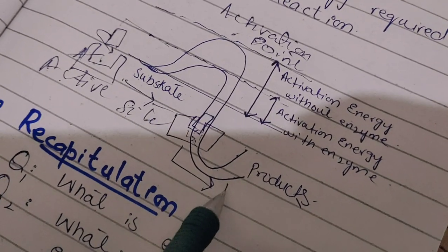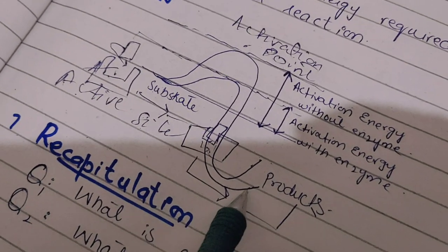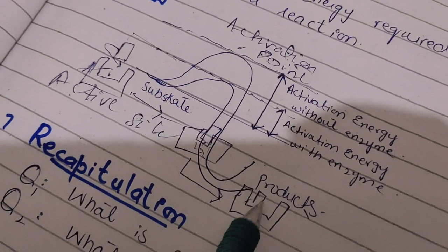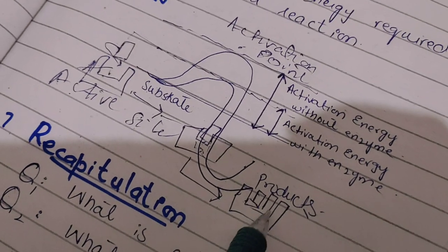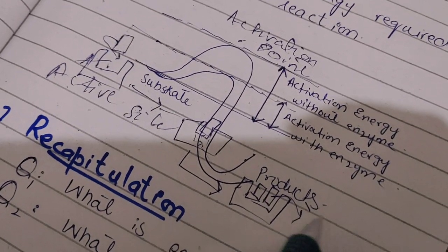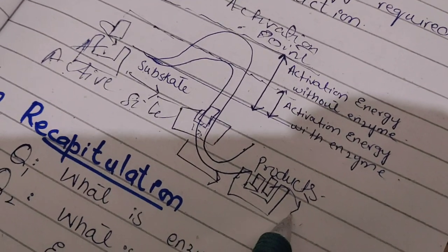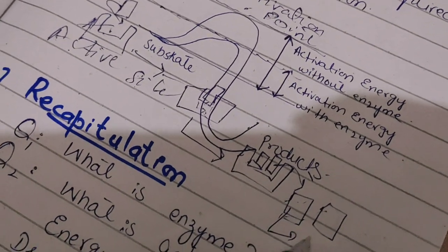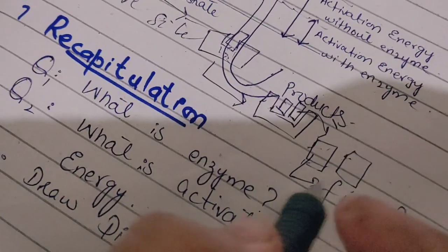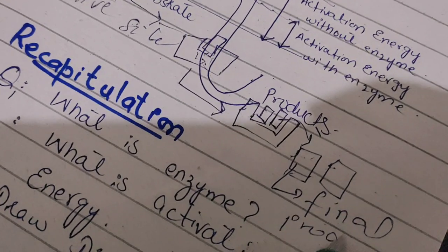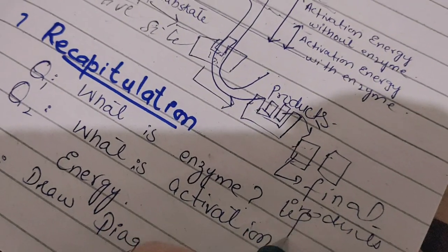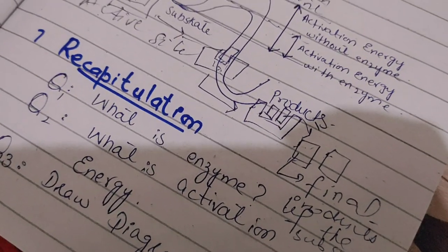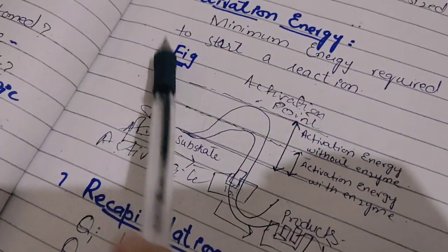The substrate converts into products — here is product one and here is product two. This is the final product of the substrate. This is the whole mechanism of the enzyme.